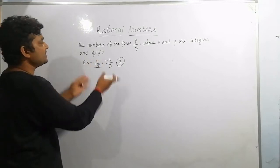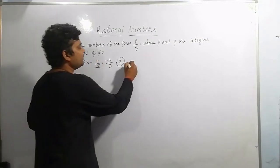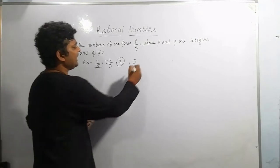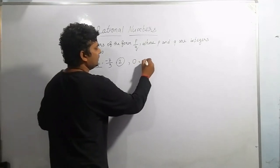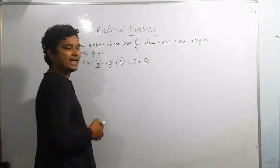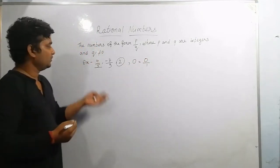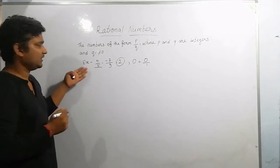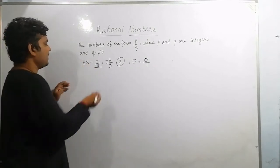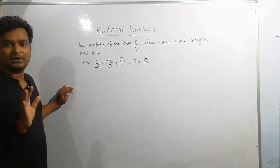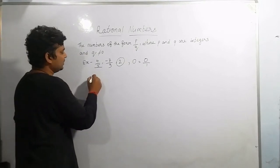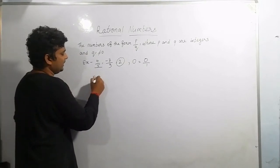If we take zero, we can write it as 0 divided by 1, so zero is also a rational number. The key point is that any number which is in the form of P by Q is a rational number. This includes all natural numbers and all integers.